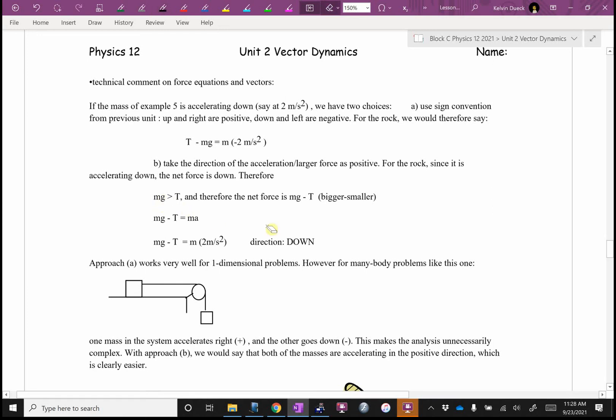So, rather than always letting things be down negative, especially this year when we're going to have more than one mass, where this mass is accelerating to the right, and we would call that positive, but this mass is accelerating down, which we would call negative, let's just decide who's winning that's going to be positive.